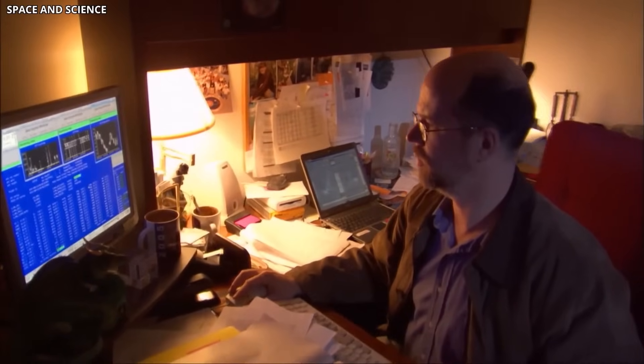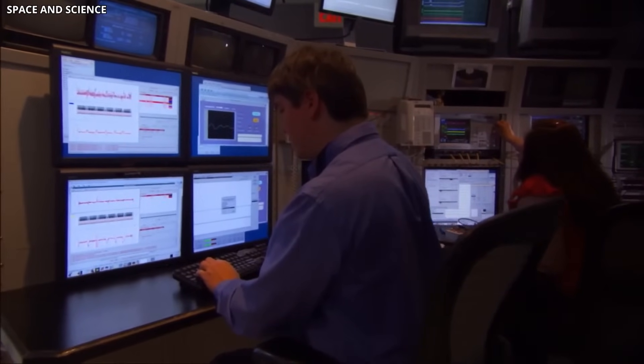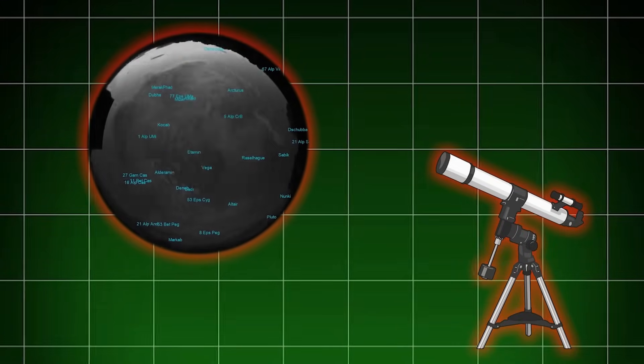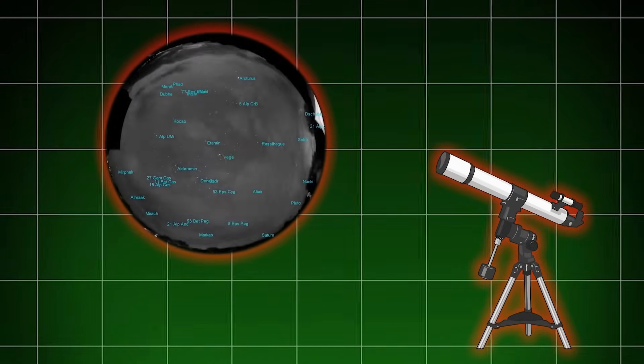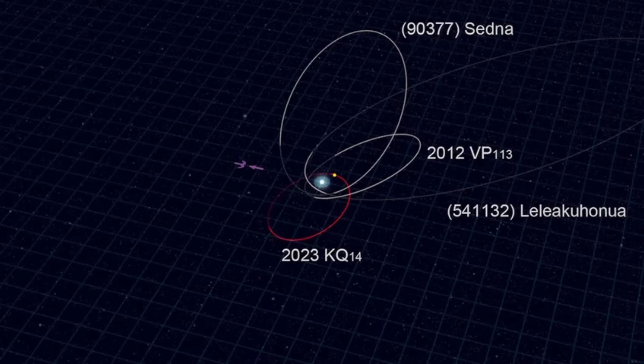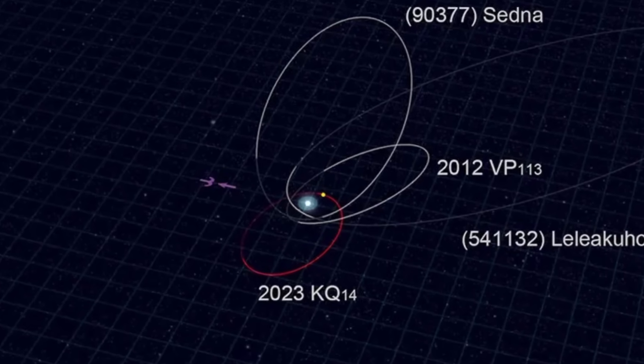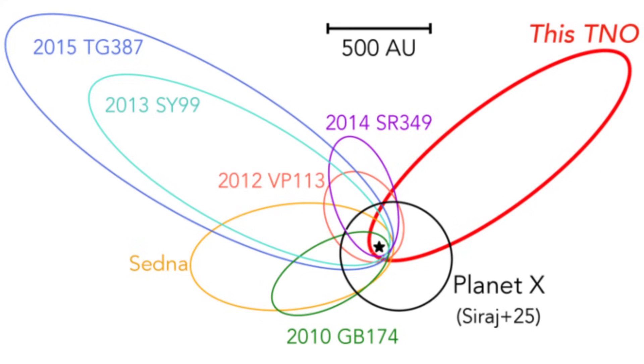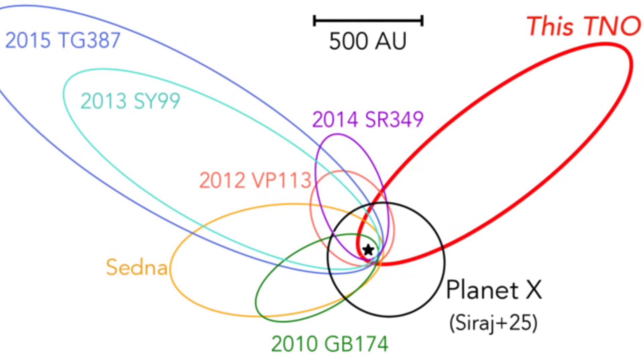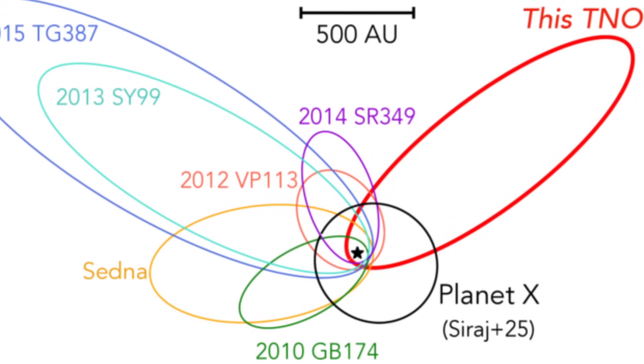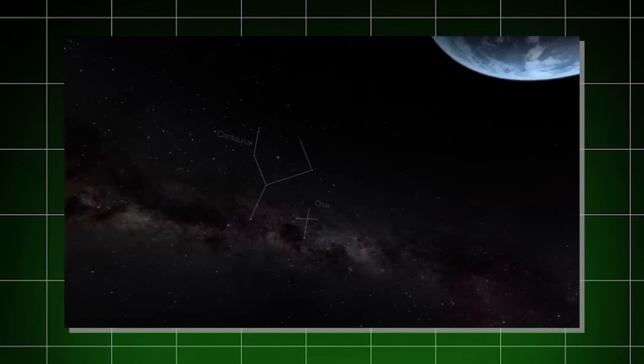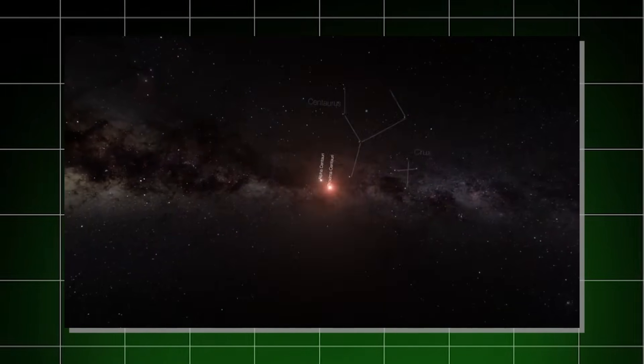There are also some scientists who think we might be fooling ourselves entirely. They point out that discovering these faraway objects is tricky. Telescopes can't scan the whole sky all the time, and we're more likely to find objects in certain regions because of where and when we look. This observational bias could make it look like there's a pattern in the orbits, when in fact it's just a side effect of where we've searched. If that's true, then there might not be any hidden object at all.